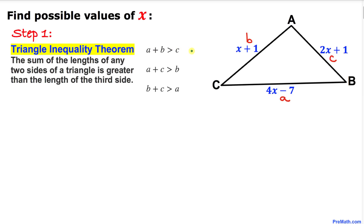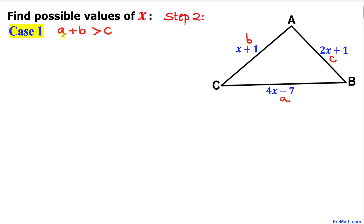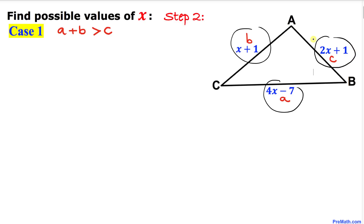So in order to find the possible values of x we must consider these three cases. Here is Case 1: a plus b must be greater than c. In our case, a is 4x minus 7, b is x plus 1, and c is 2x plus 1.